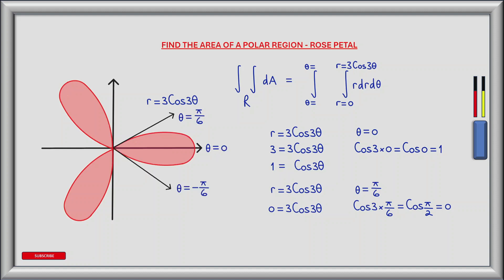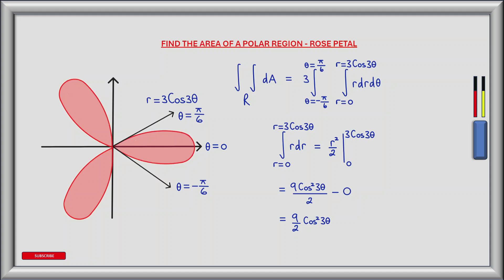Using the fact that the petals are symmetrical, the other half of the petal lies between angles theta equals 0 and theta equals minus pi over 6. So the limits of our outer integral go from theta equals minus pi over 6 to theta equals pi over 6. To obtain the area of all three petals we multiply this result by 3. Now let's evaluate the double integral, beginning with the inner integral: the integral of r dr between r equals 0 and r equals 3 cos 3 theta.